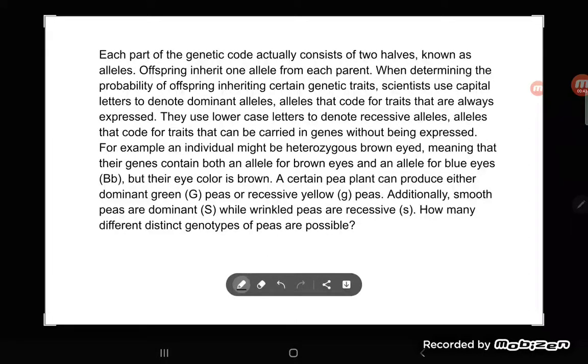Let's go ahead. Each part of the genetic code actually consists of two halves known as alleles. Offspring inherit one allele from each parent. When determining the probability of offspring inheriting certain genetic traits scientists use capital letters to denote dominant alleles, alleles that code for traits that are always expressed. They use lowercase letters to denote recessive alleles, alleles that code for traits that can be carried in genes without being expressed. For example an individual might be heterozygous brown eyed, meaning that their genes contain both an allele for brown eyes and an allele for blue eyes, big B little b, but their eye color is brown.